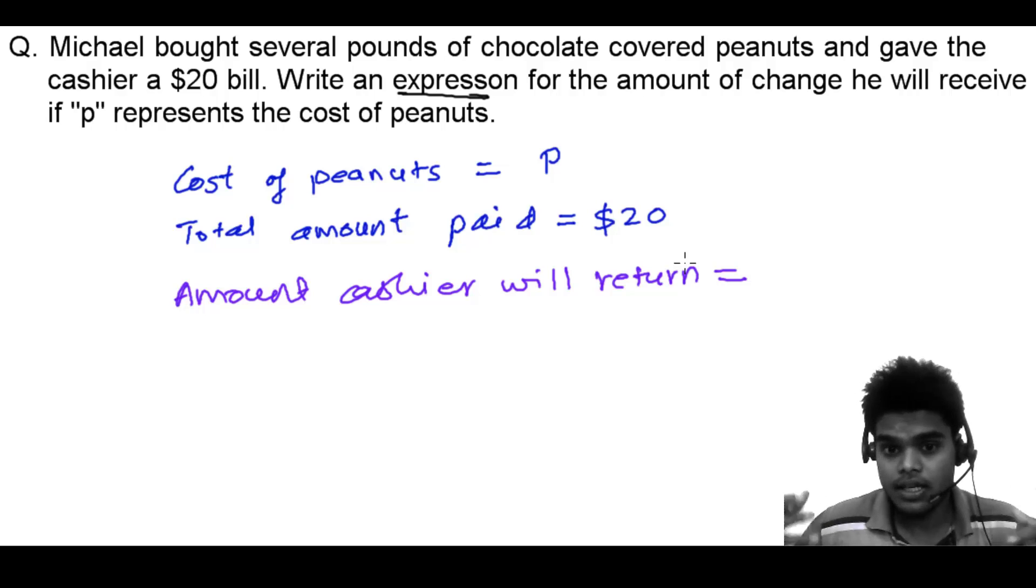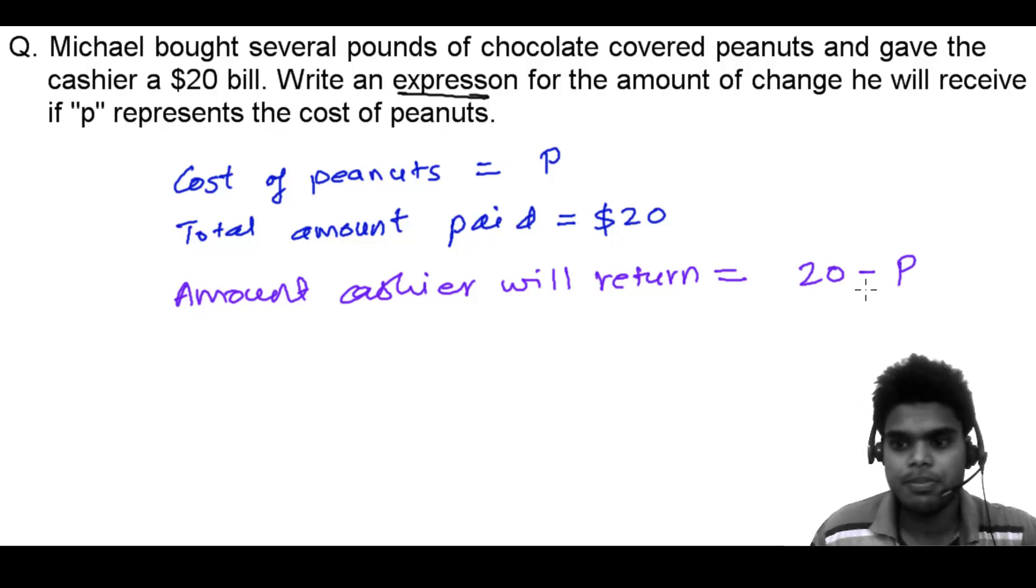He paid $20 but the peanut cost P, P dollars. So just we need to subtract, $20 minus P. So $20 minus P, that's the amount he should be paid.